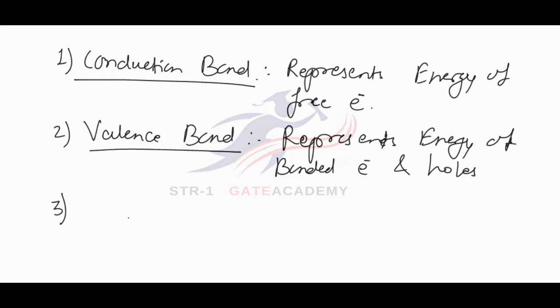The third band is called the forbidden band. The forbidden band is the separation between the conduction band and the valence band. If an electron is present in the valence band, it cannot move even if supply is given. If we want this electron to take part in conduction, we have to first move it from the valence band to the conduction band, and for this we have to apply some energy — supply some energy to the material.